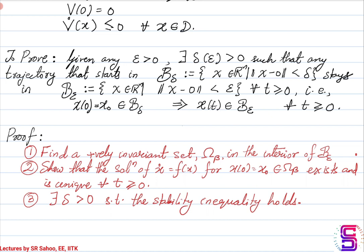Second, we will show that the solution of x-dot equal to f(x) with x(0) equal to x_0 exists and is unique for all t greater than equal to 0, where x_0 is a point in the invariant set we found. Third, we will show that there is a delta ball we can find such that the epsilon-delta stability holds, thus establishing the Lyapunov theorem.